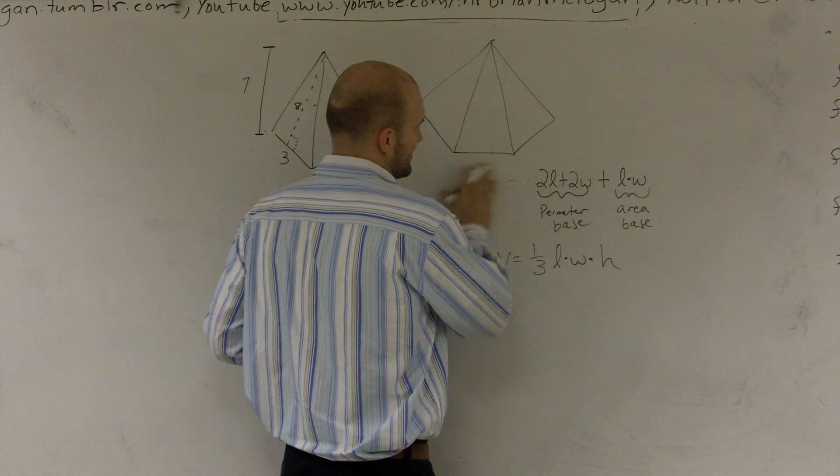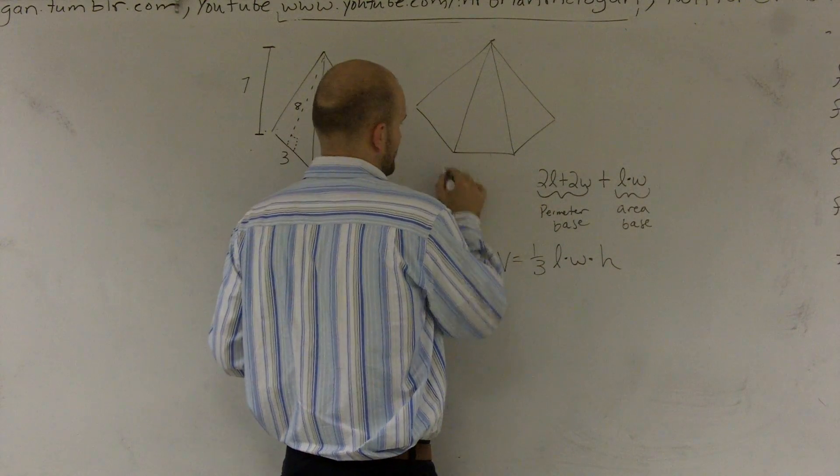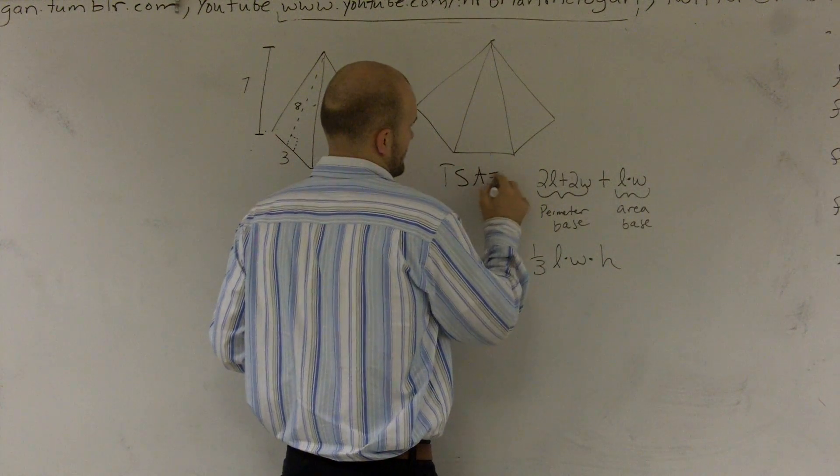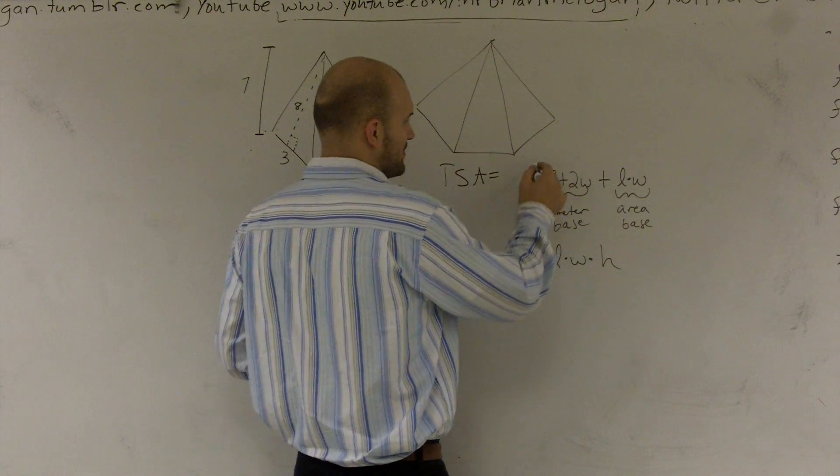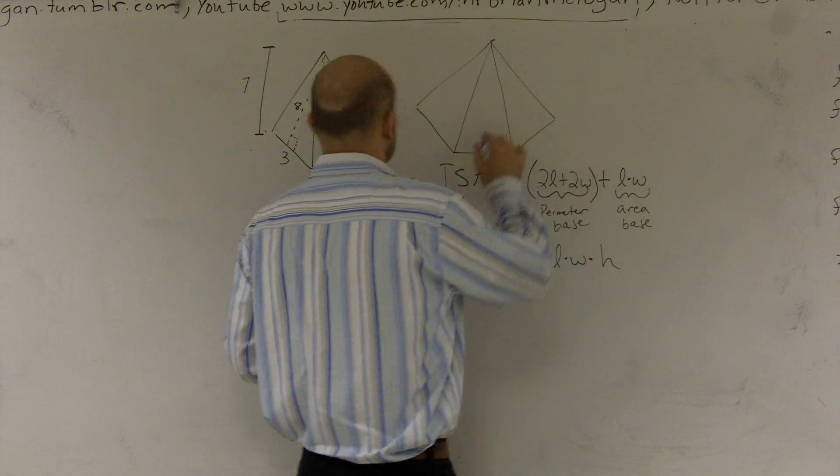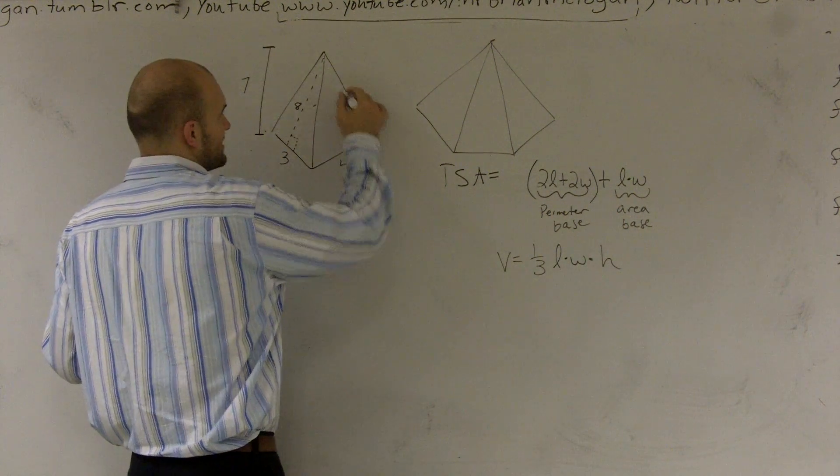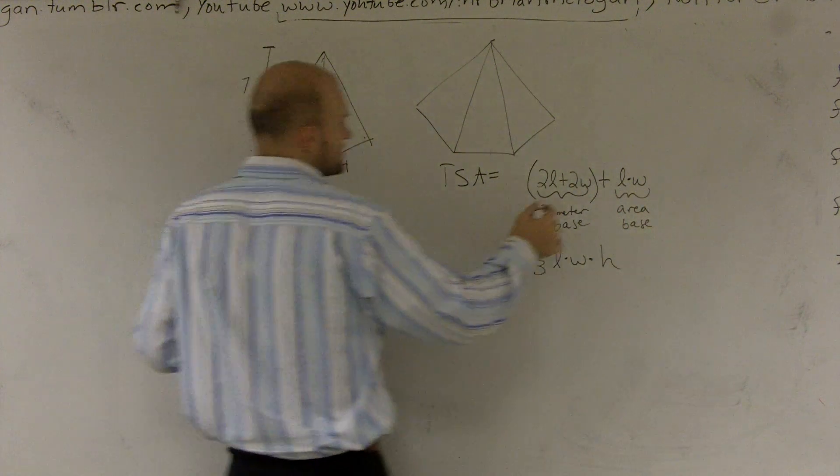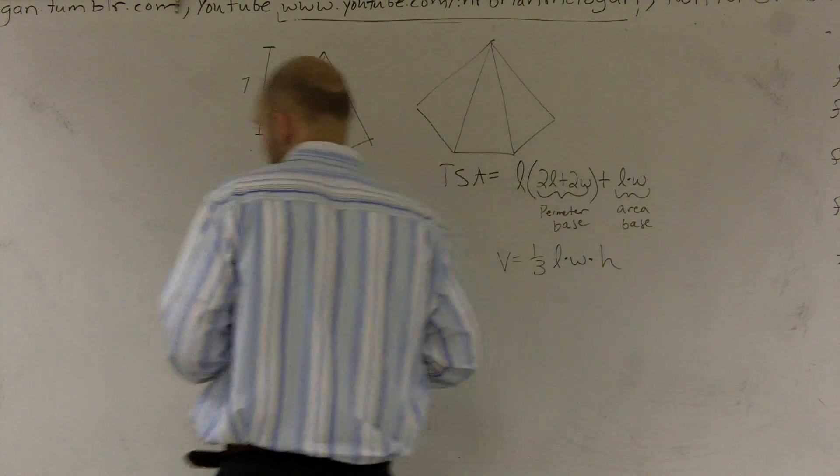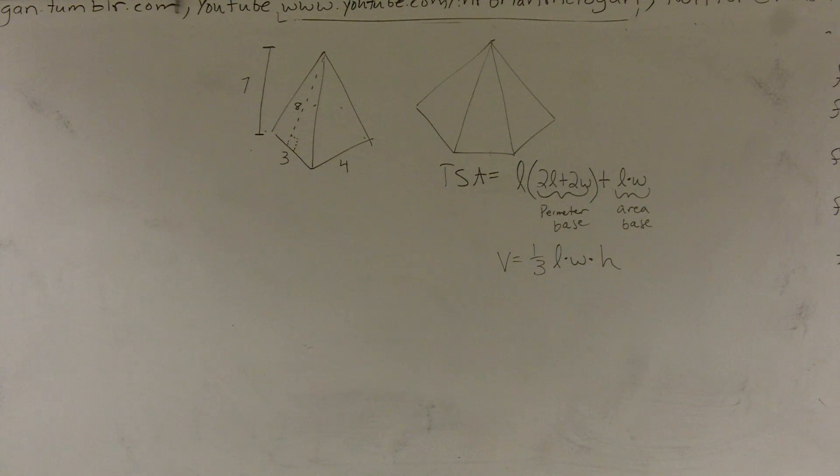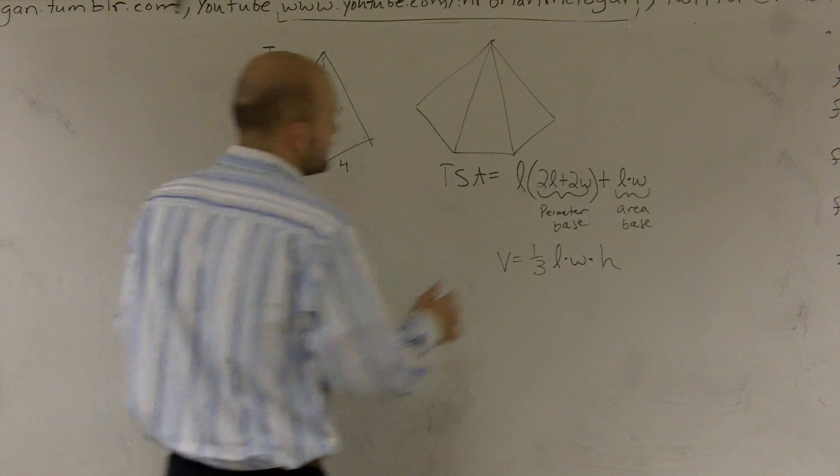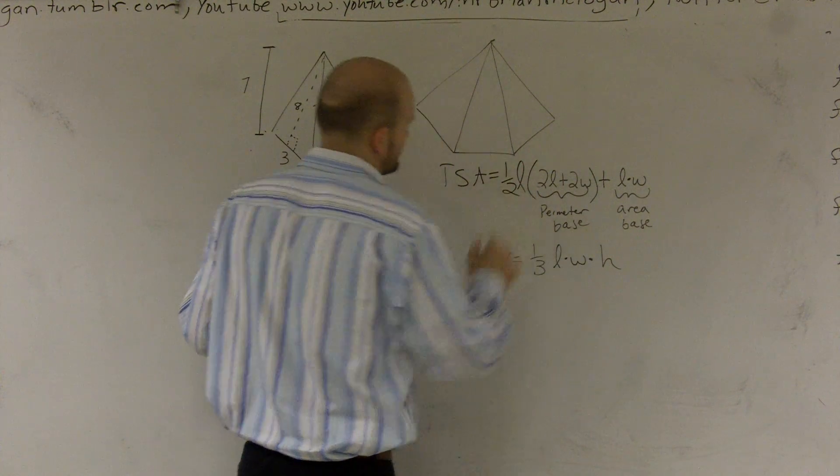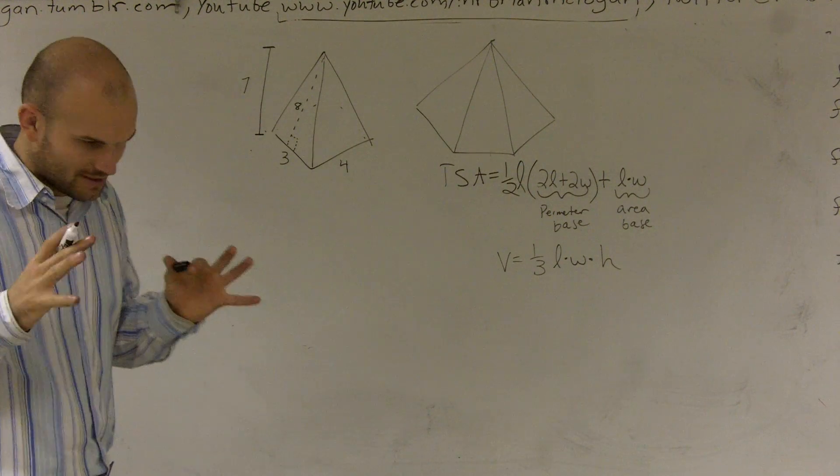Perimeter of base - I need to take my perimeter of my base, and I also need to multiply it by my length. So my length is going to be the length of one of my sides. And then the last thing I need to make sure I do is also multiply it by 1 half. There we go.